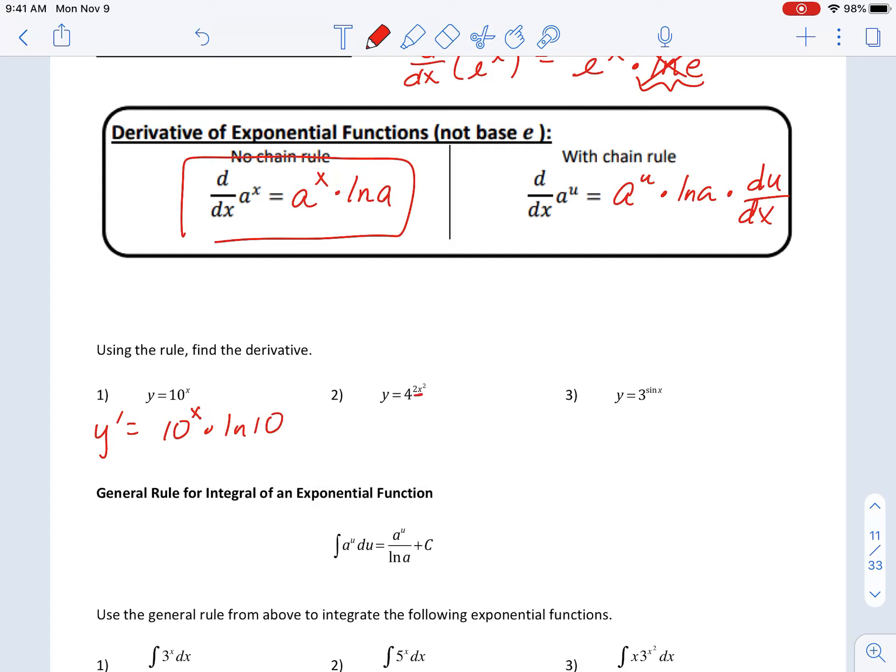This one, you have a u sub idea there. So the derivative of 4 to the 2x squared is 4 to the 2x squared times ln of 4 times chain rule, 4x.